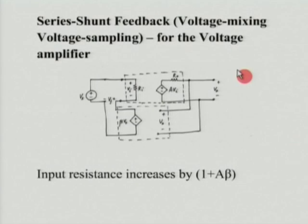Let us quickly see some applications and look at some actual circuits to see how these parameters improve. One of the most important things to remember about negative feedback is that by applying it, your ordinary amplifier goes from its non-ideal situation towards the ideal situation. For a voltage amplifier, ideally the input resistance should be infinite and the output resistance should be zero — we can never get that, but by applying negative feedback, we can get very close.